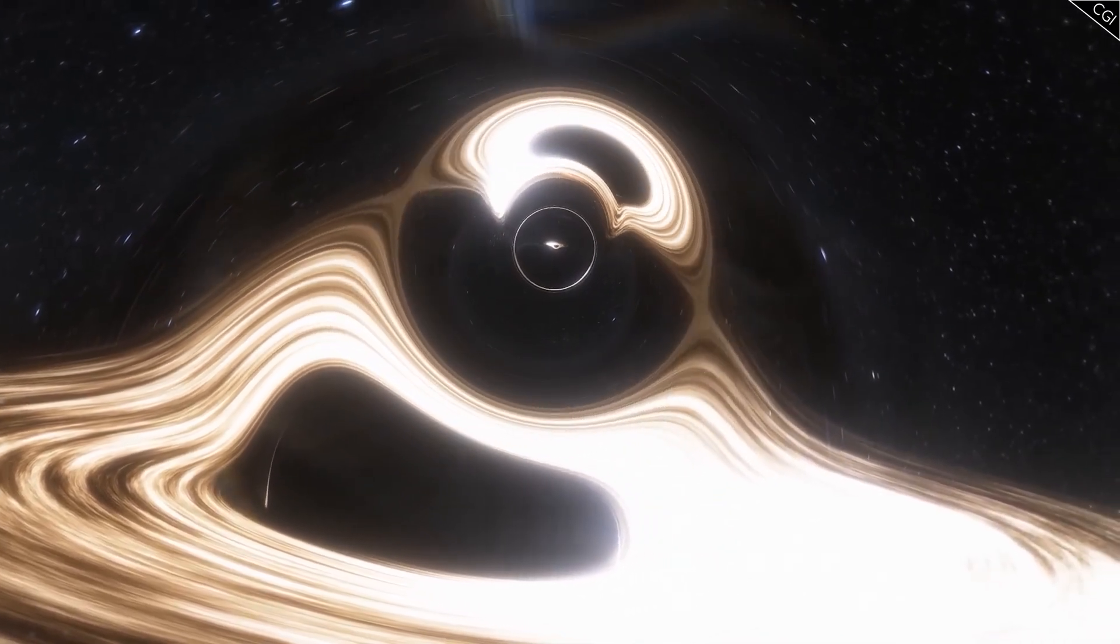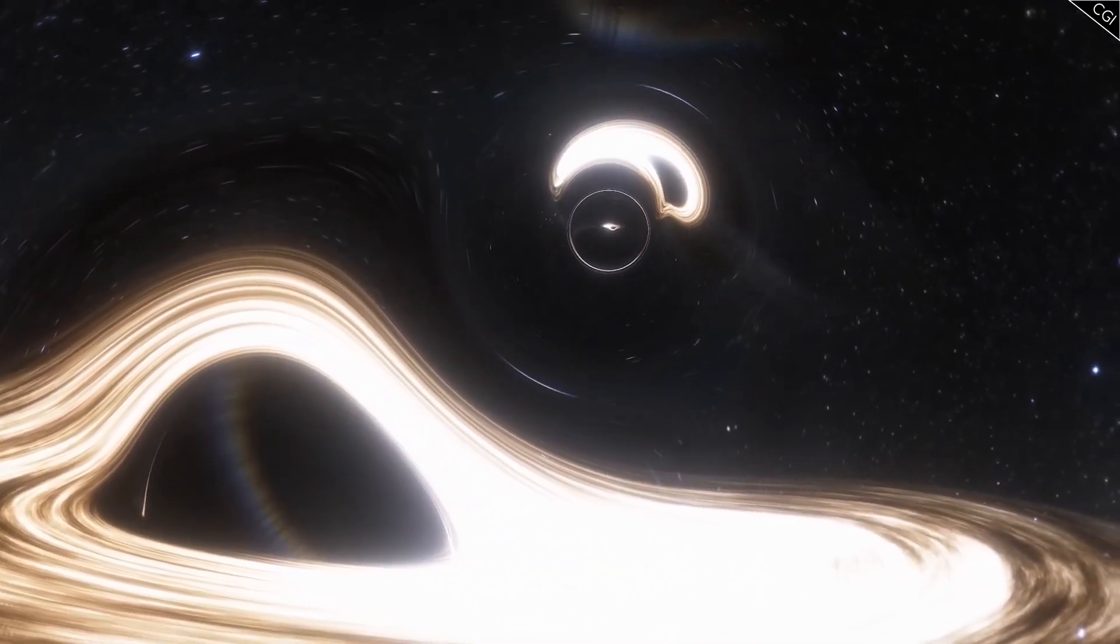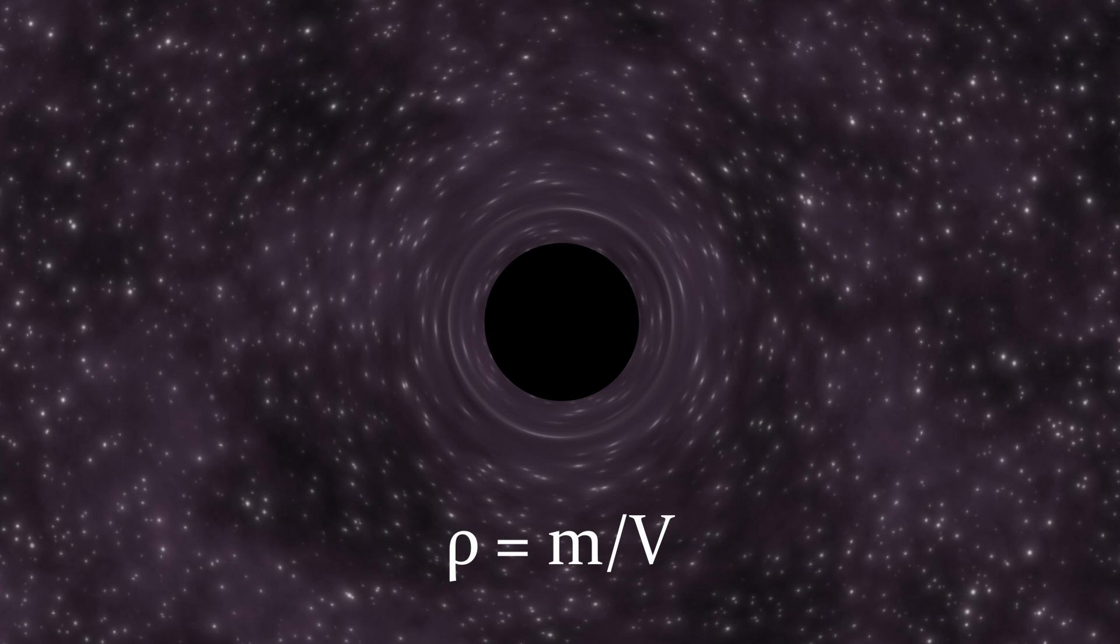Firstly, we need to define the density of black holes. Density is mass divided by volume, but what should we consider as the volume of a black hole? Typically, it's the volume of the sphere defined by the event horizon, the region beyond which nothing can escape. If we consider density as the mass divided by this volume, it doesn't necessarily have to be extreme.